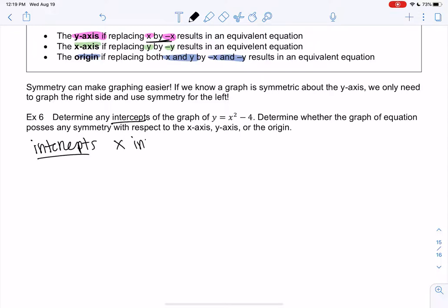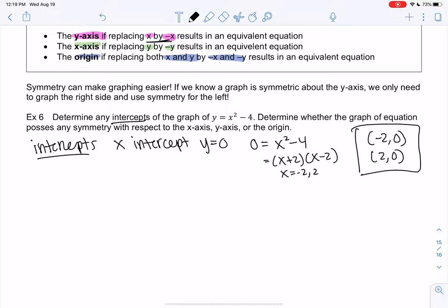Intercepts. So the x-intercept is when y equals 0. So 0 equals x squared minus 4. Since it's quadratic, I'm going to factor. So we'll do x plus 2, x minus 2, because it's a square, difference of squares. So we have two intercepts when x is negative 2 and 2. So negative 2, 0, and positive 2, 0. Those are my x-intercepts.